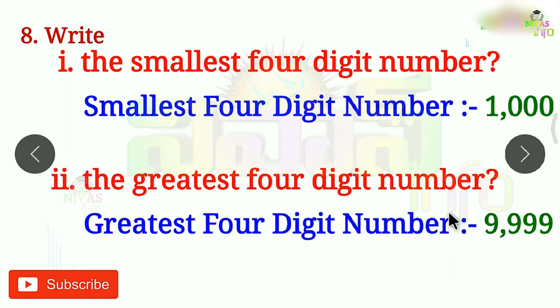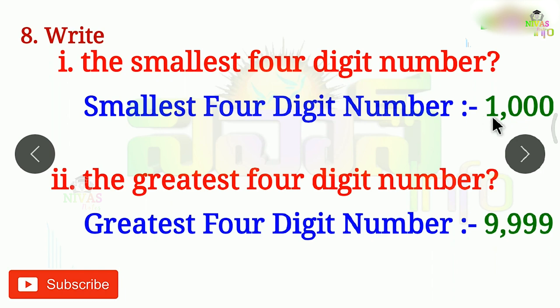The next number after 9,999 is 10,000, which is a 5-digit number. So the greatest 4-digit number is 9,999 — that's all four places filled with 9s. For the greatest 4-digit number: 1, 2, 3, 4 — four 9s gives 9,999. For the smallest 4-digit number: 1, 2, 3, 4 places — the first digit is 1 and the rest are 0s, giving 1,000.